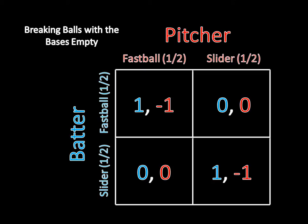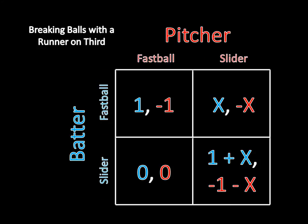If the batter is always guessing fastball, the pitcher will always throw a slider. And if the pitcher is always throwing a slider, the batter will always guess slider, and so forth. We've covered that in the past, and we know what the equilibrium is for this game.